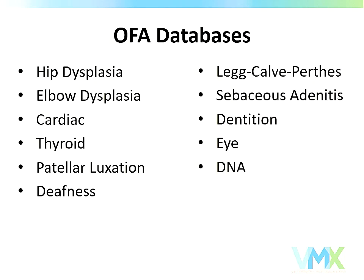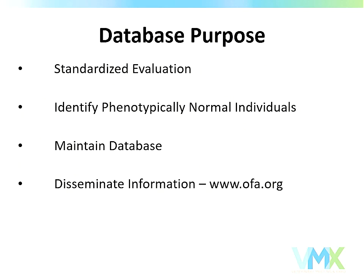Today we're going to concentrate on the primary three: hips, elbows, thyroid, patella luxation, and cardiac. The purpose of any database is to offer a standardized evaluation. With hips, we use the hip-extended VD view — the primary positioning that most databases around the world employ — to identify phenotypically normal dogs. It was never OFA's intent to identify the percent dysplasia in any breed. OFA's purpose is to identify phenotypically normal dogs to be used for breeding, and this data is maintained over time and available to the public through our website.